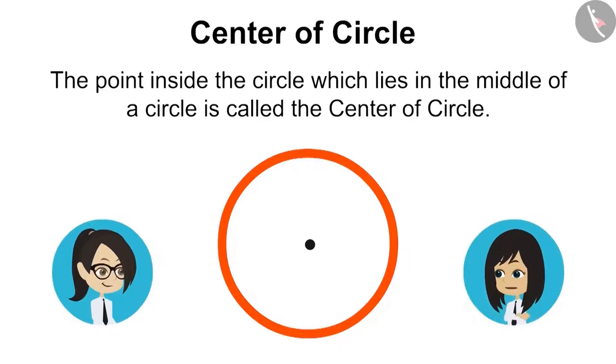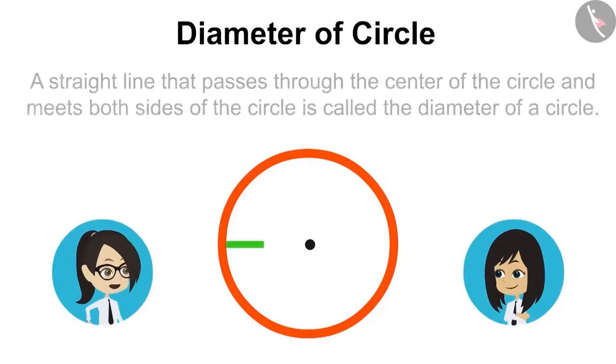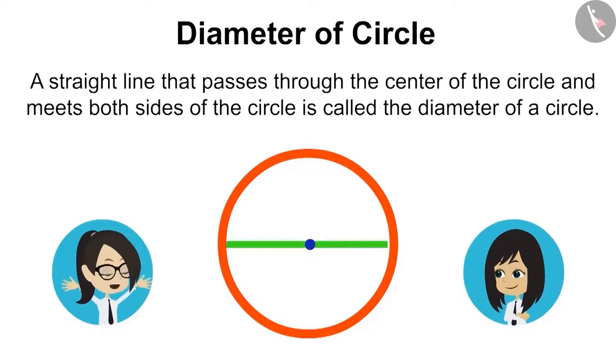Now can you talk about diameter? A straight line that passes through the center of the circle and meets both sides of the circle is called the diameter of circle.